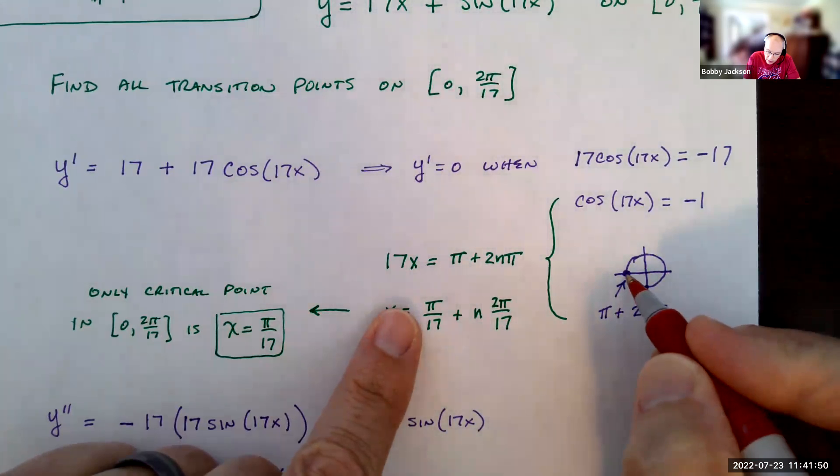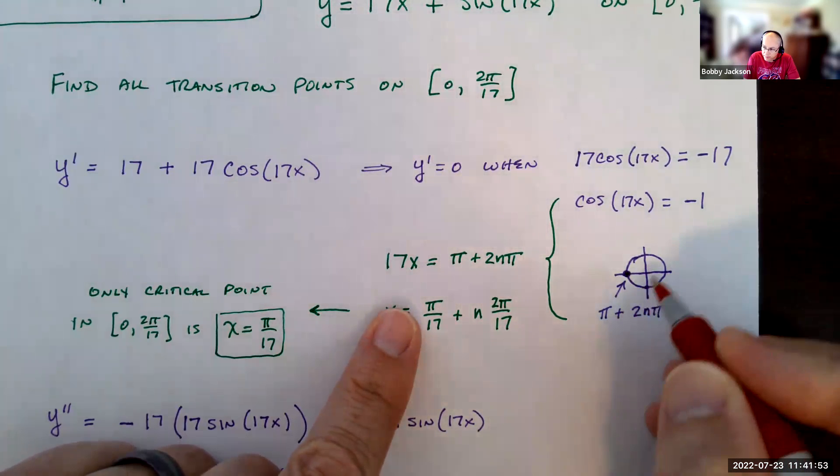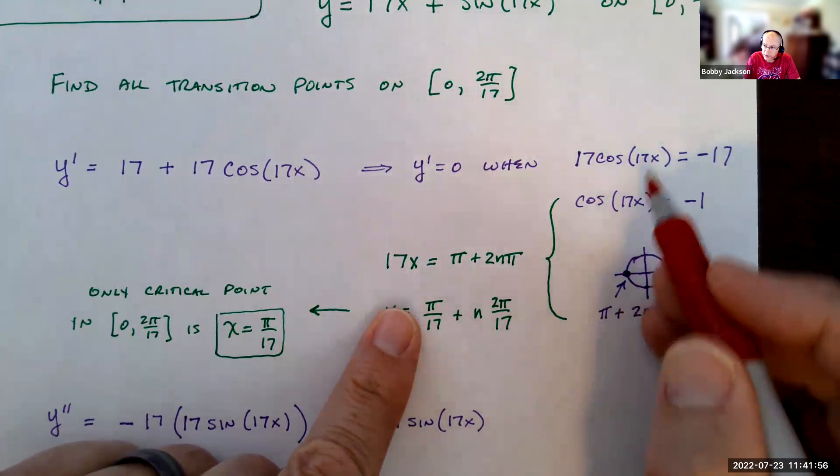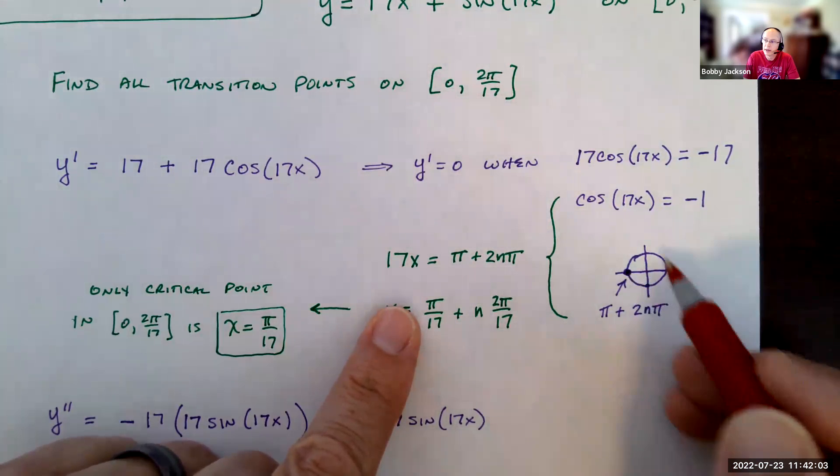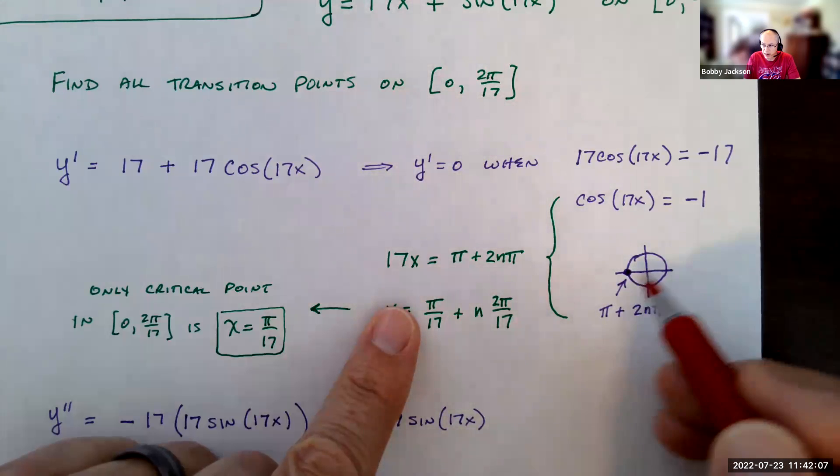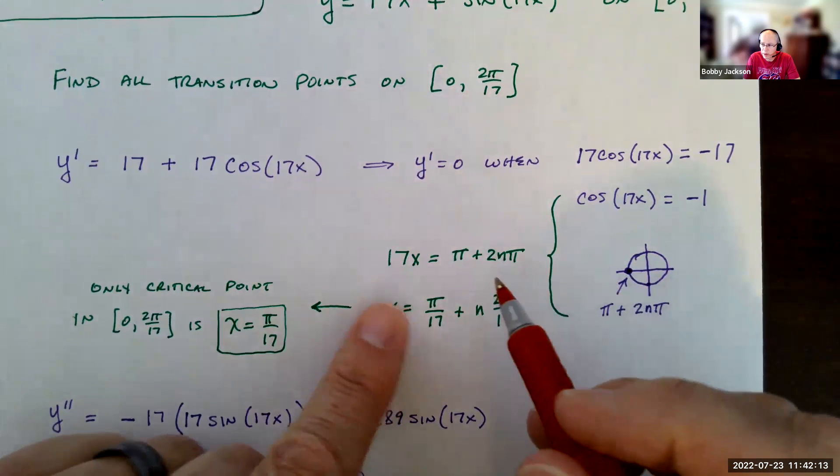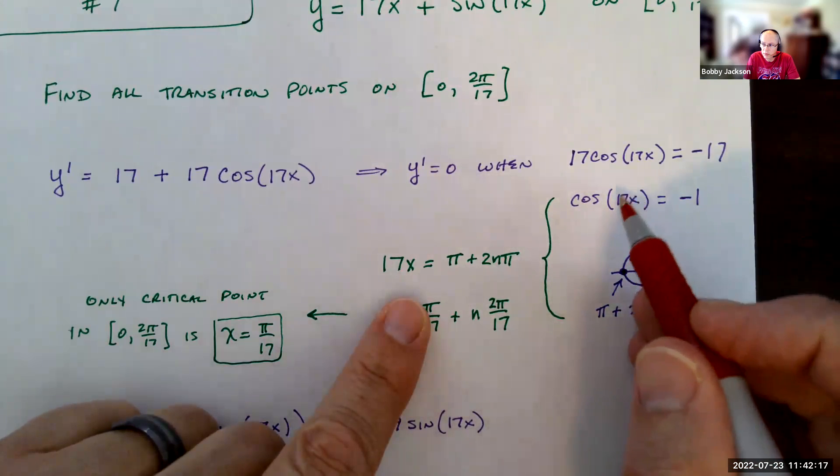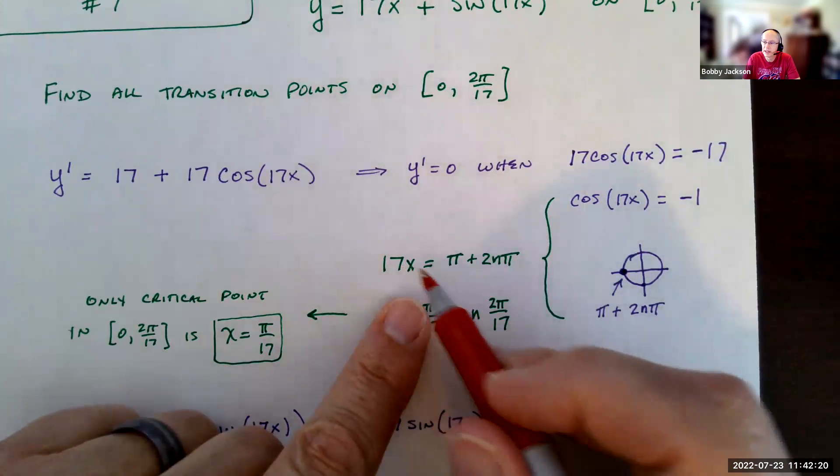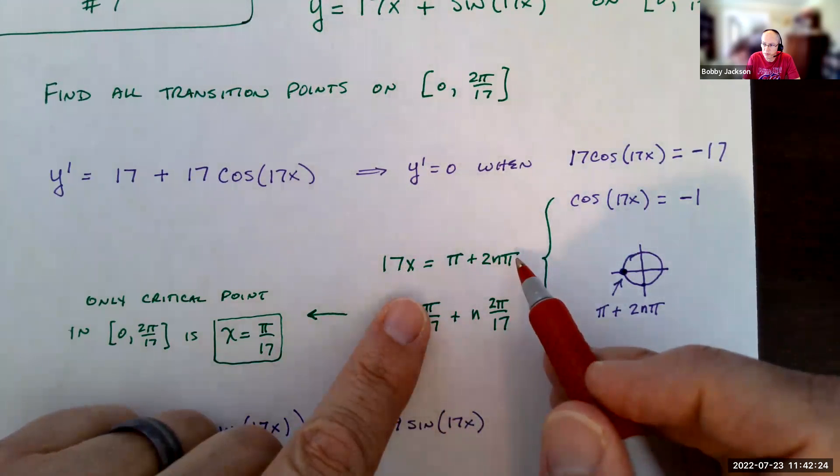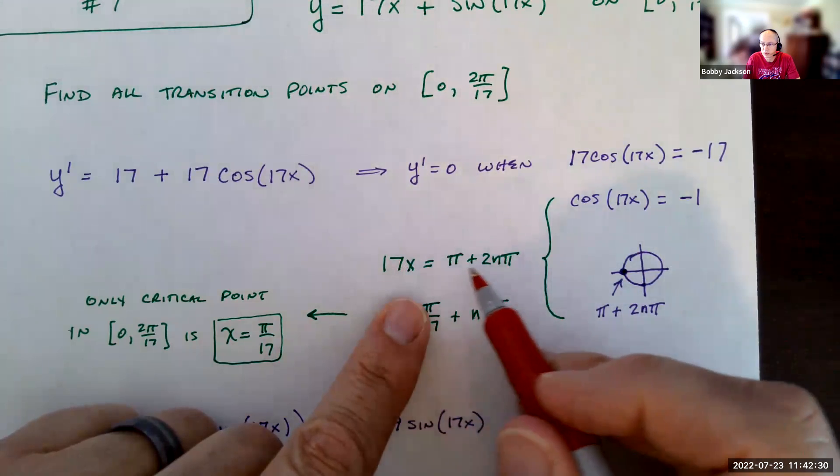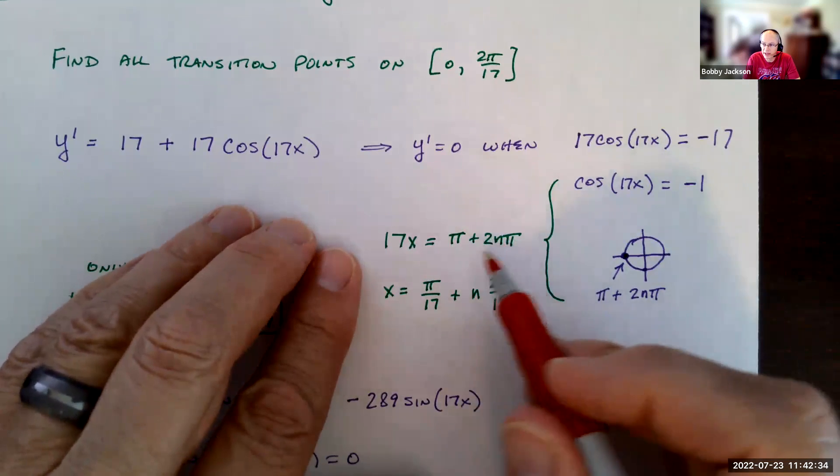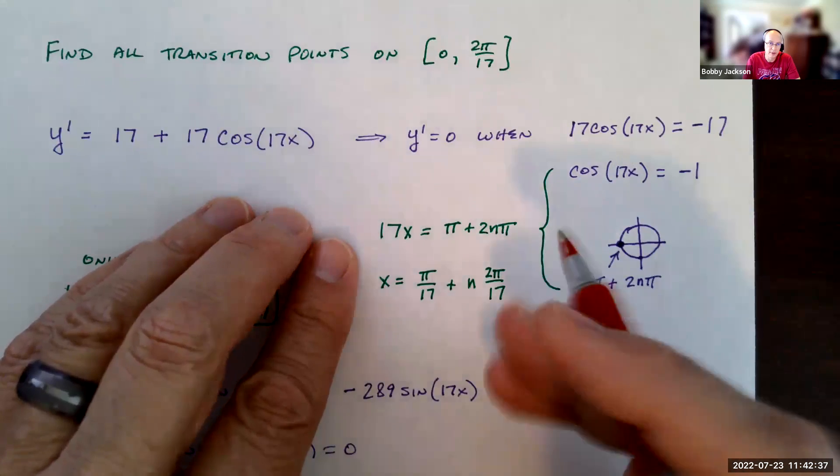Well, on the unit circle, when the x coordinate is negative 1, right back here, that's going to be at π. Since it's a multiple angle here, cosine of 17x, you've got to think about going around multiple times, right? So π plus any multiple of 2π. So π, 3π, 5π. Of course, negative π, we can even go in negative directions. But remember, this is not the value of x. This is the value of what we're taking the cosine of, which is 17x. So 17x is going to be π plus any multiple of 2π. So this n here is any integer.